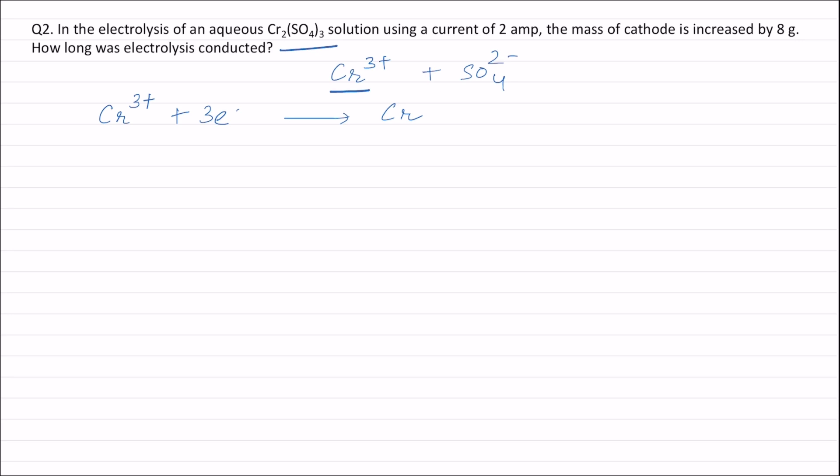As can be seen from this equation, the change in oxidation number of chromium is 3. Therefore, equivalent weight of chromium will be atomic weight of chromium divided by 3, which is equal to 52 divided by 3. This is the equivalent weight of chromium.